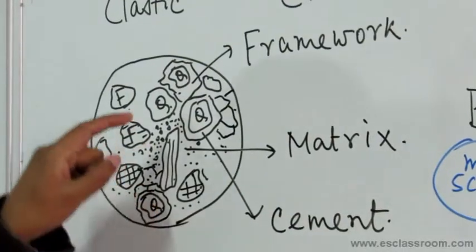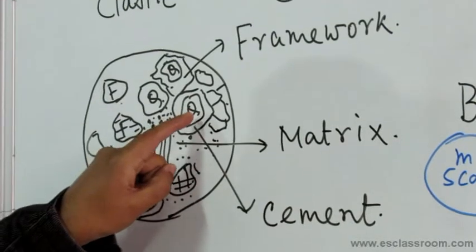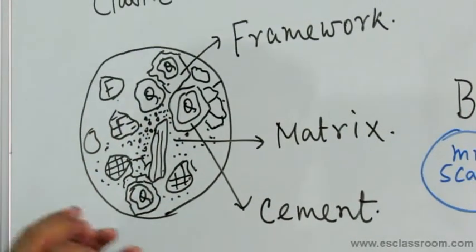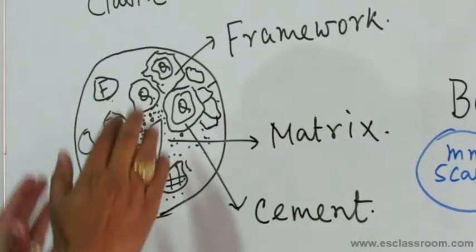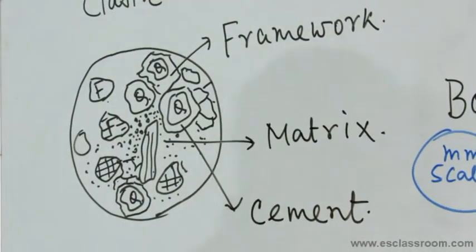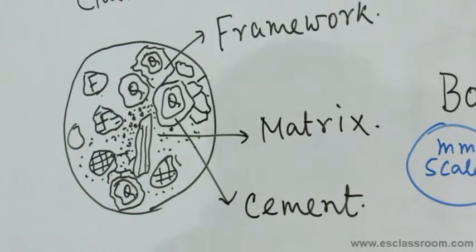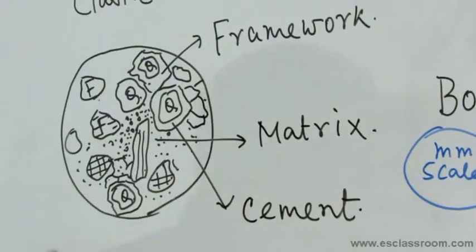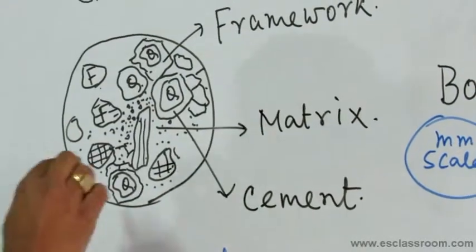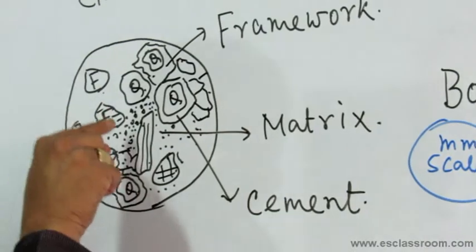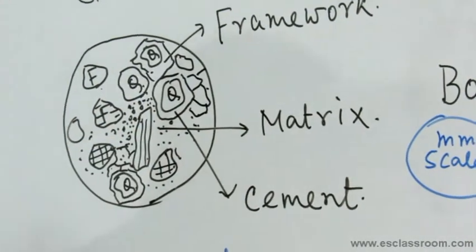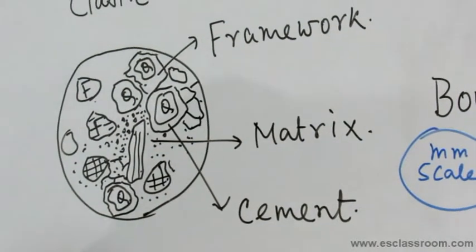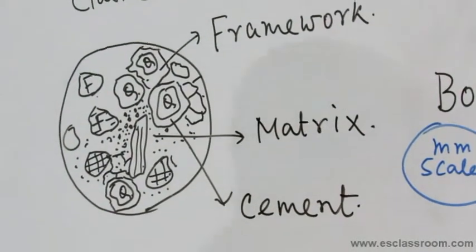This figure shows how the arrangement of grains really looks in a clastic sedimentary rock. You can see there are some grains already marked, such as quartz and feldspar — they occur as fragments within the rock, which we call the framework grains. These form the framework like the bones form the framework of our body. Similarly, these grains form the framework of the sedimentary rock.